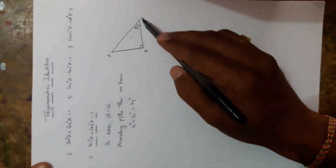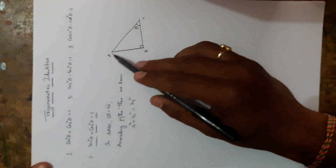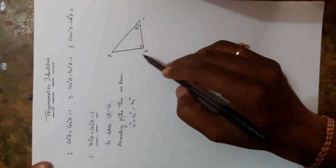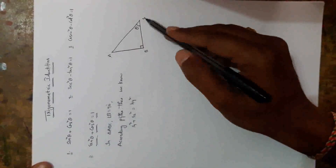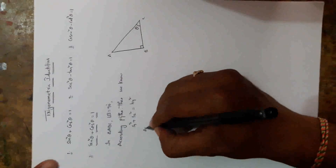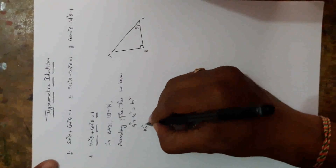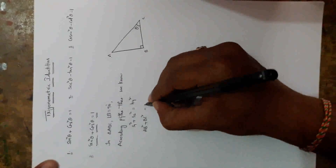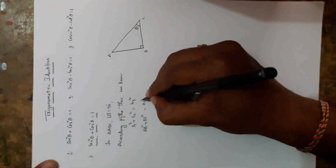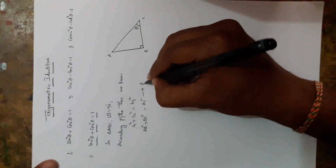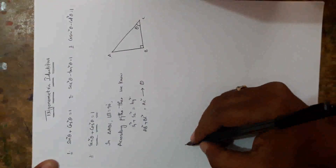In triangle ABC, AC is the hypotenuse, and AB and BC are the two sides. So clearly, AB squared plus BC squared is equal to AC squared. Take this as equation number 1.